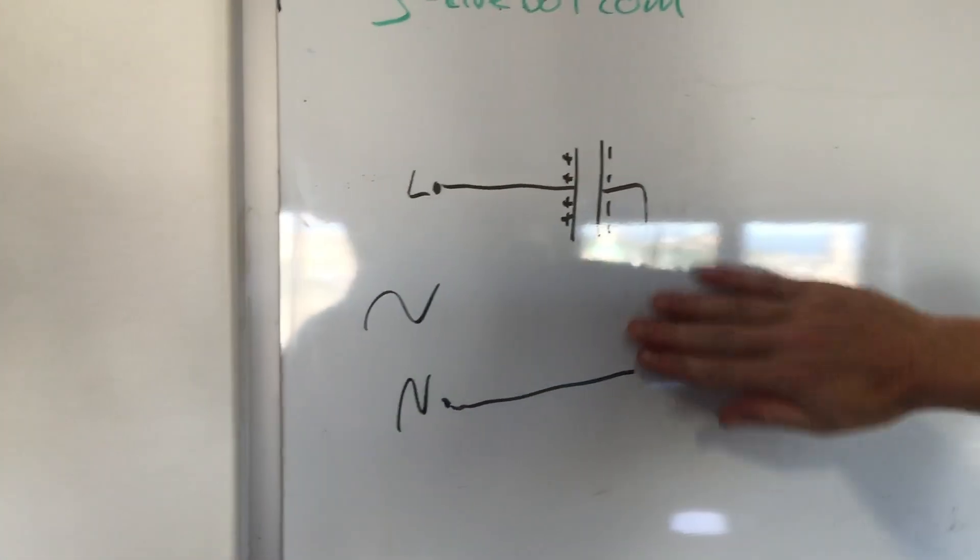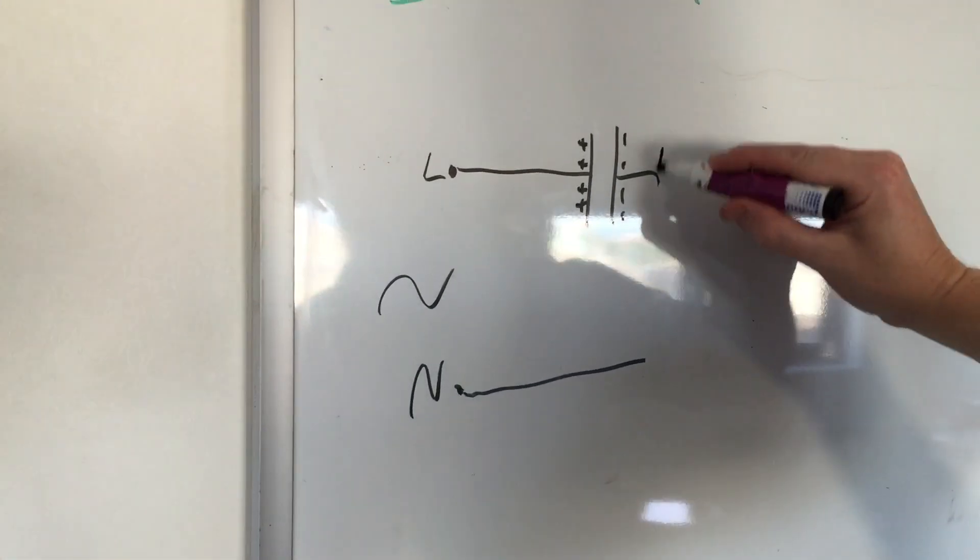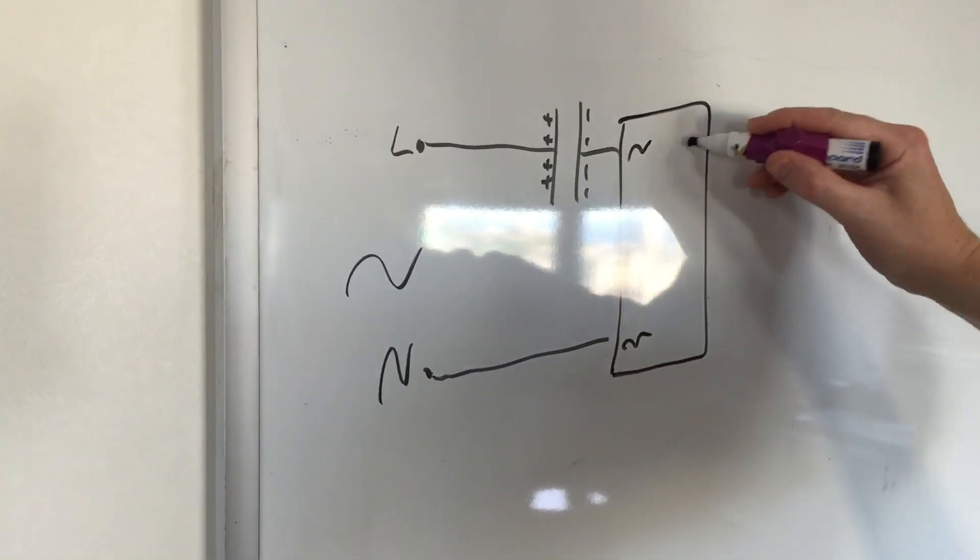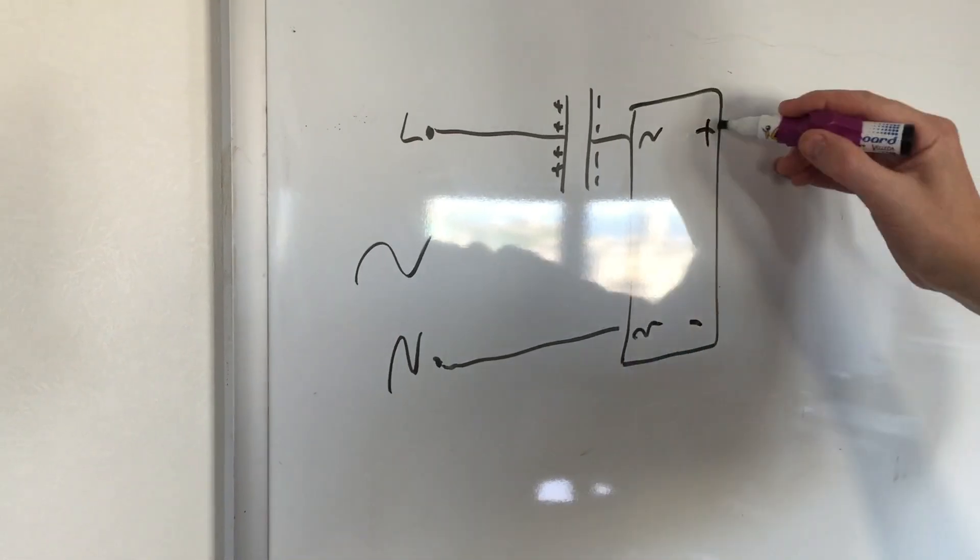Then you put that through a bridge rectifier - AC, AC, plus, minus. That's a terrible AC symbol, but that's okay.